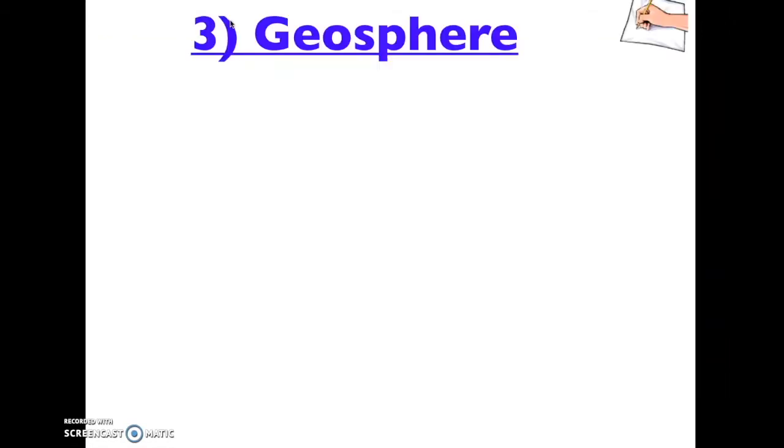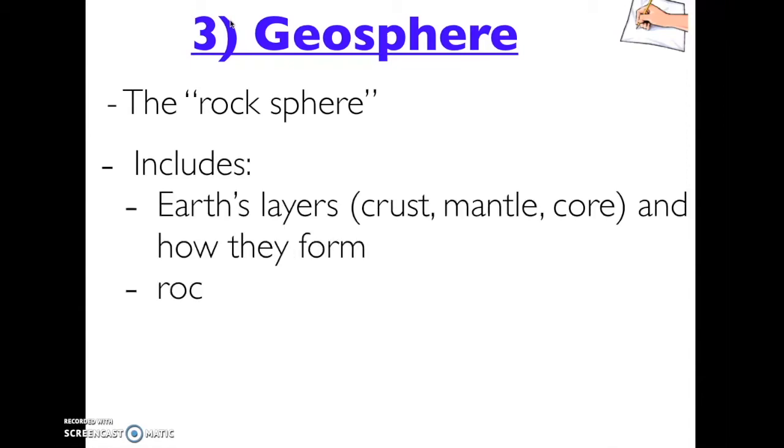The next system is the geosphere, also known as the rock sphere. The geosphere includes Earth's layers, which are the crust, mantle, and core, and how they form.